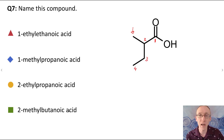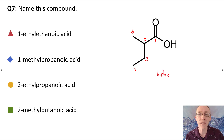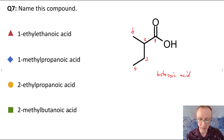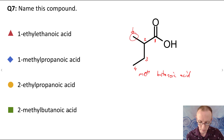So we have a four-carbon chain. If it were an alkane, that would be butane. So with a carboxylic acid, it becomes butanoic acid.